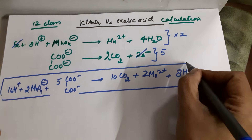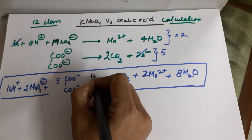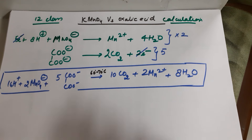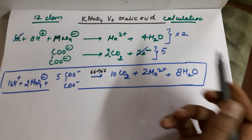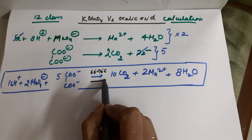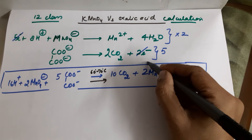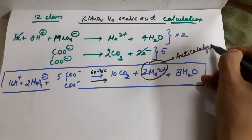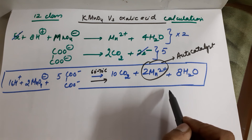This is the net reaction you should know for the titration of KMnO4 versus oxalic acid. This titration takes place between 60 to 70 degrees Celsius, which should be mentioned on the reaction arrow because you heat during this titration. Heating also helps because CO2 gas escapes out of the system, driving the reaction in the forward direction. Only initial heating is required — no continuous heating — because Mn²⁺ acts as an autocatalyst; once the reaction starts it continues till the end.